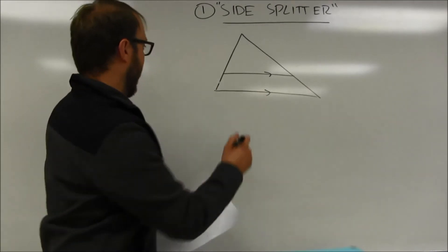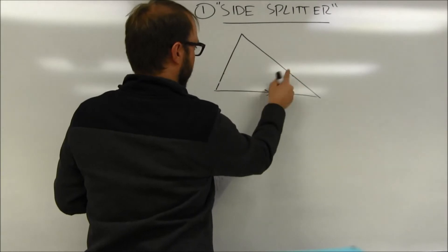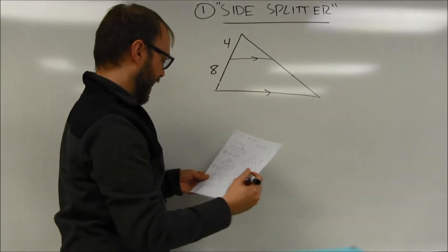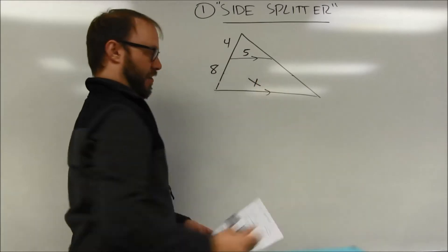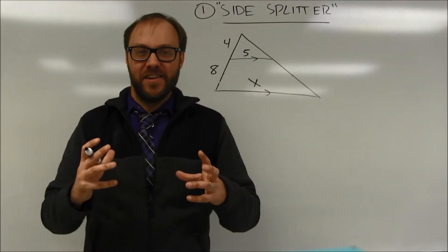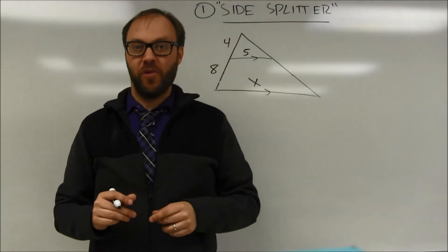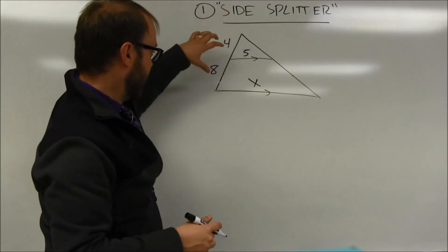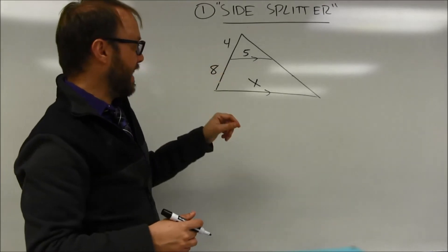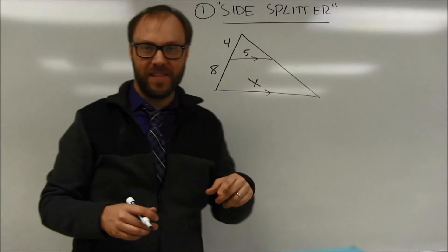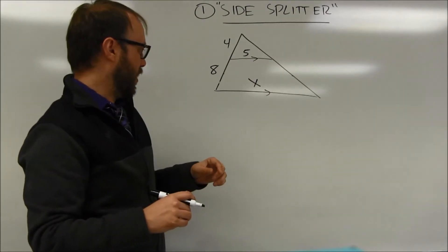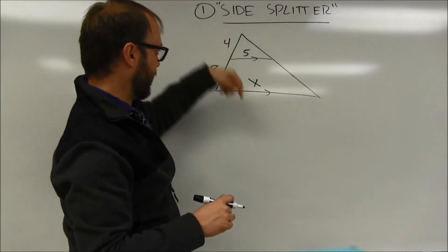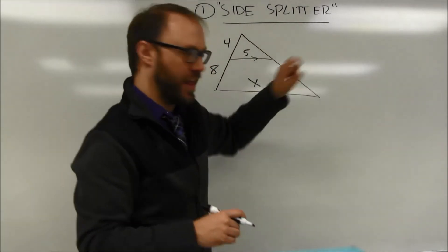Here's a second problem. Let's say I have a line parallel to the base with lengths 4, 8, 5, and x. Resist the urge to just stick four numbers into a proportion — you really need to think about what you're comparing. If I do upper part over lower part, I need to compare an actual upper part to a lower part. In this diagram, 4 and 5 are full sides of the triangle, not upper parts. I'm not comparing upper parts to other upper parts and lower parts to corresponding lower parts.